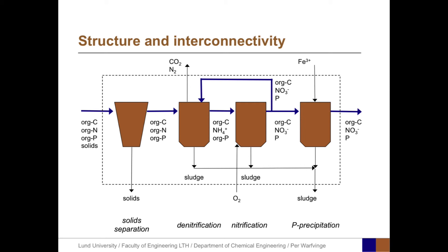Even the simplest representation contains many separate entities that are connected and interdependent. In the first phase, we have solid separation. Then denitrification, where nitrate is transformed to nitrogen gas. After that, nitrification, where ammonia is oxidized to nitrate with microbes. The final stage is phosphorus removal, where iron is added. This is a good example of structure and interconnectivity within an engineered system.